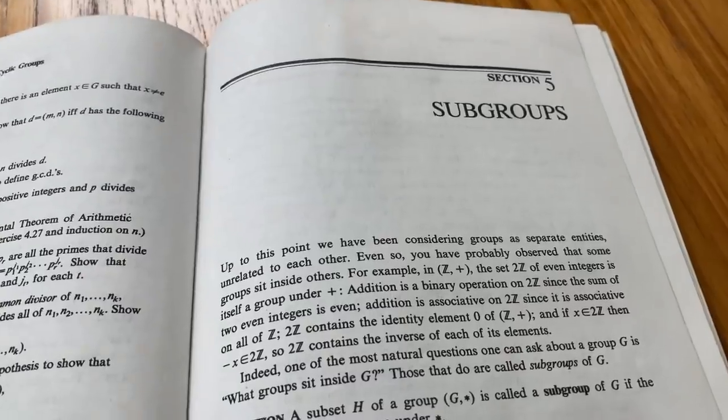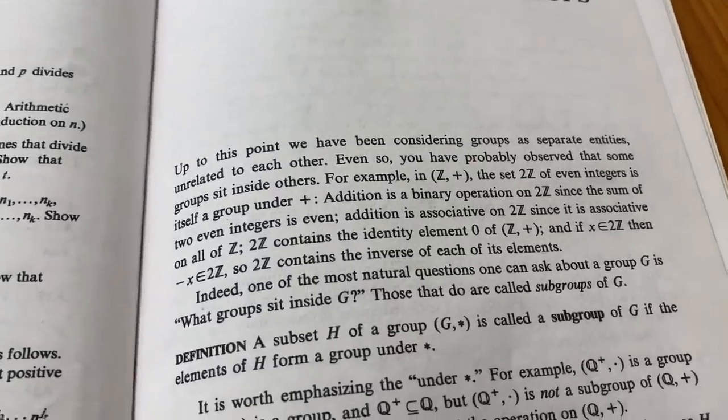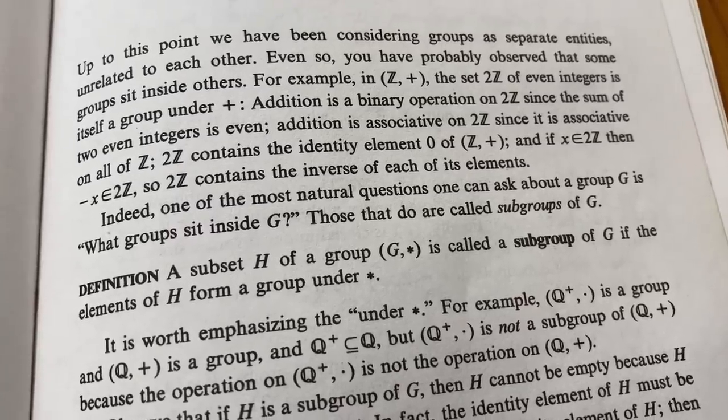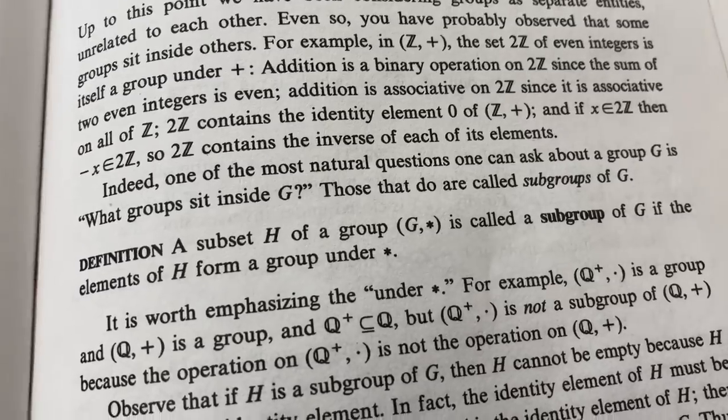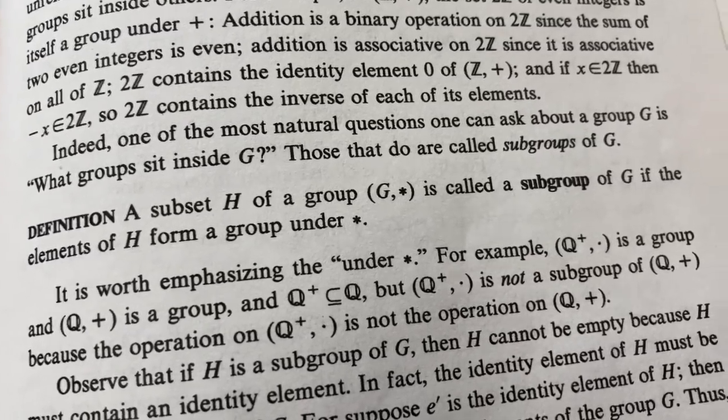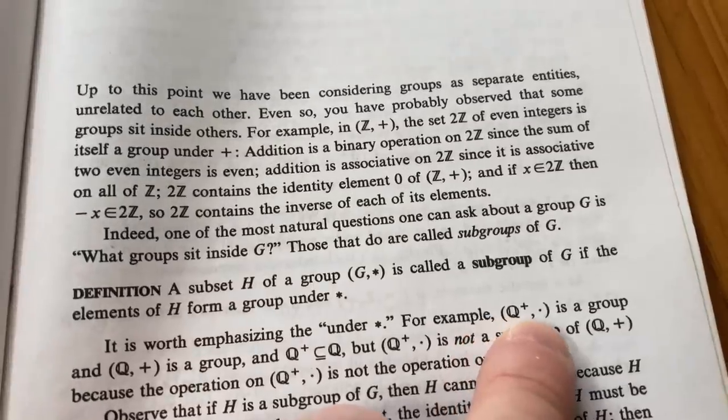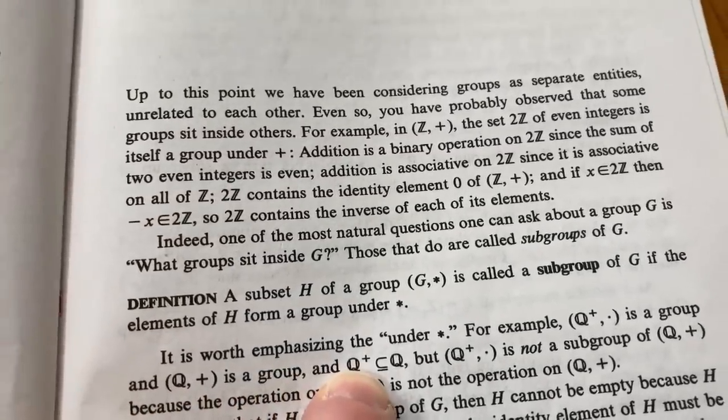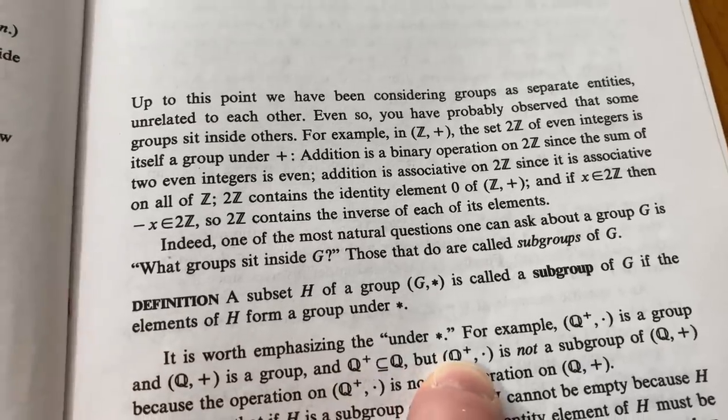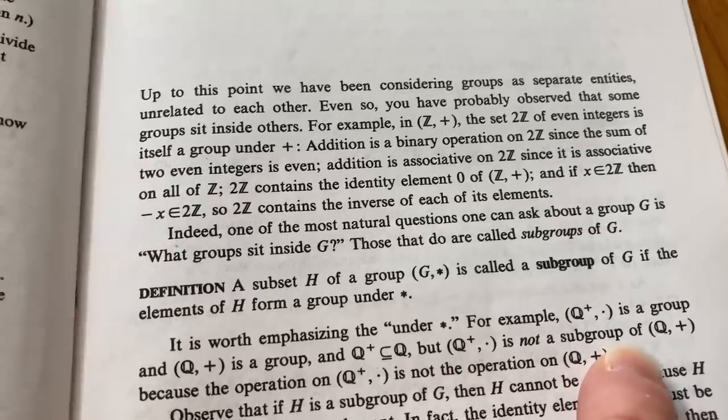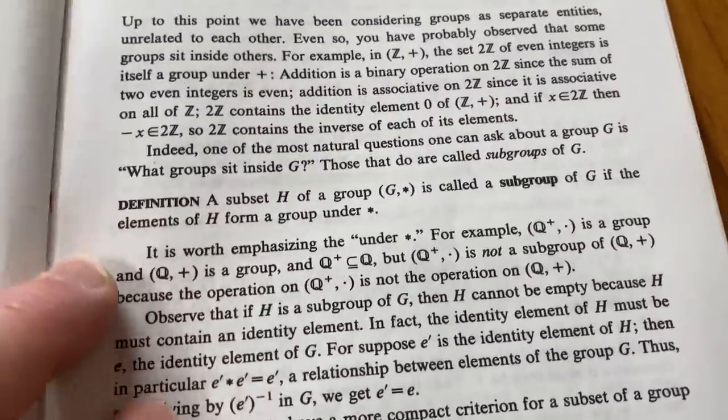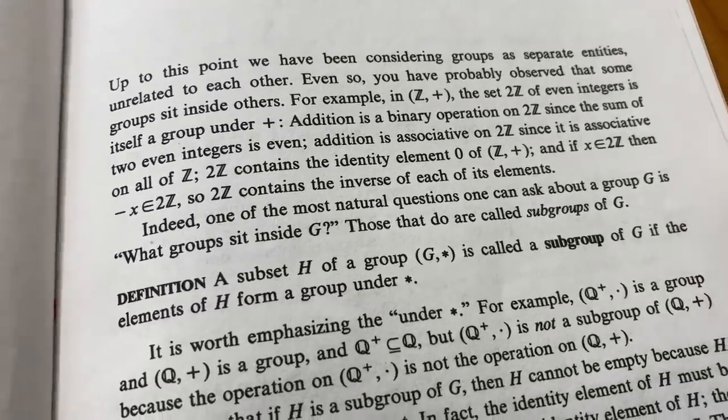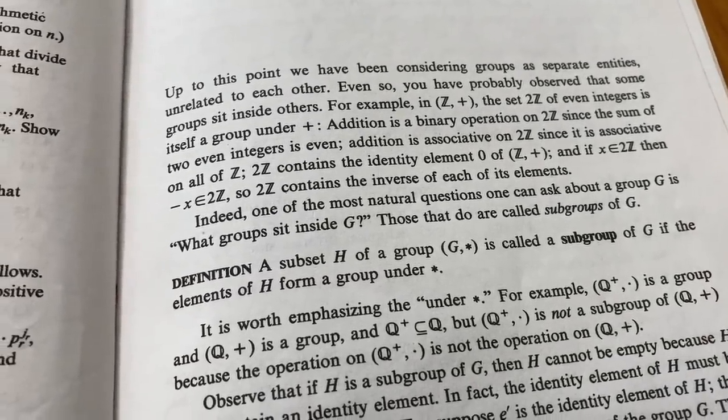Let's take a look inside it. This is the section on subgroups. And here we have the definition of a subgroup. He says that a subset H of a group G is called a subgroup of G if the elements of H form a group under star. And then he says here it's worth emphasizing the under star. For example, if you look at the positive rationals under multiplication, that's a group, and the rationals under addition is also a group. The positive rationals are a subset of the rationals, but the positive rationals under multiplication is not a subgroup of the rationals under addition. And that's because the operations are different. So it has to be the same operation. So little stuff like that is emphasized throughout the book. And it's written at a very elementary level. And I think that's what makes this a readable book.